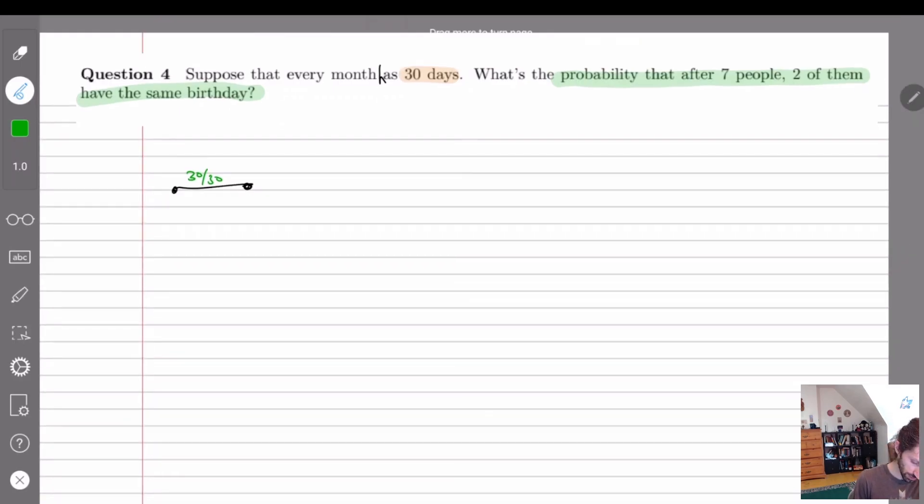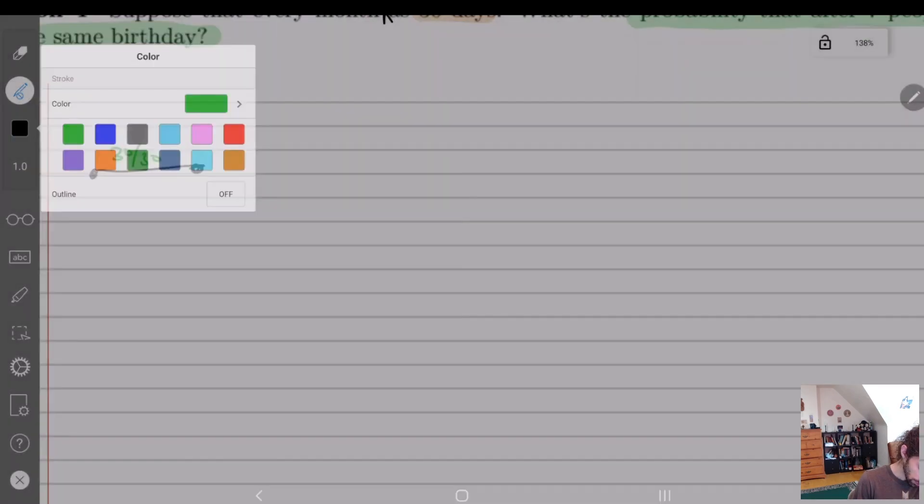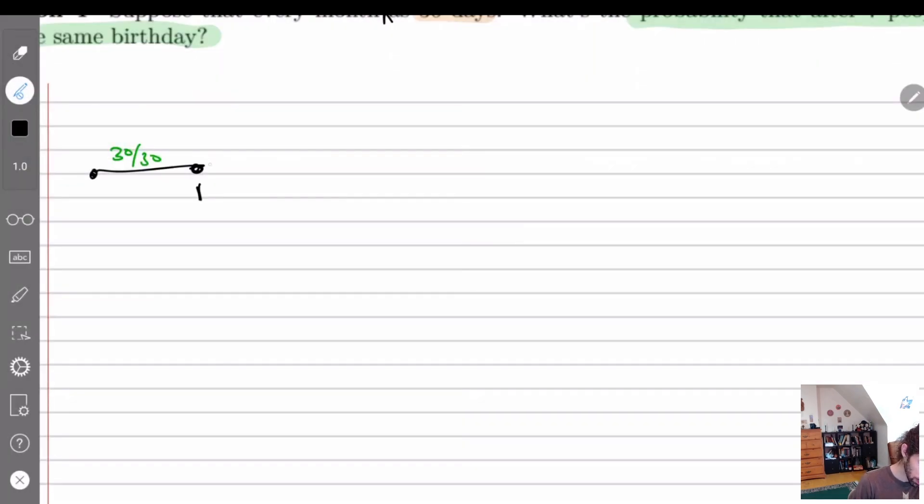So okay so we start off with there's no one and then there's a first person and if there's a first person what are the chances that they're going to have a different birthday than everyone else? 100% right? There's a 30 out of 30 chance that they're a unique birthday.